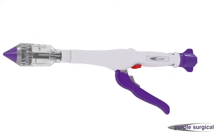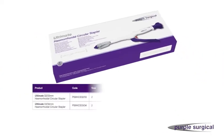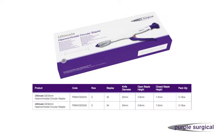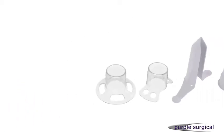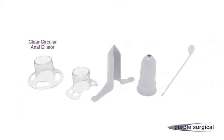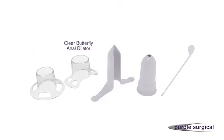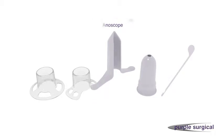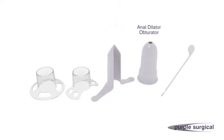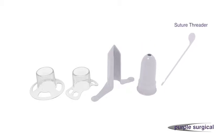There are two size options available: 32-33mm and 33-34mm. Supplied and packaged with the following five accessories: a clear circular anal dilator, a clear butterfly anal dilator, a purse string suture anoscope, an anal dilator obturator, and a suture threader.